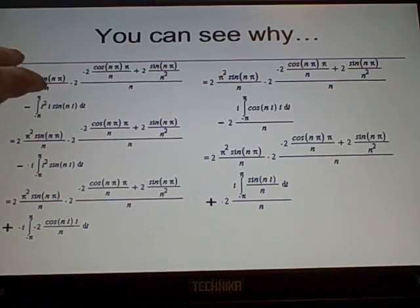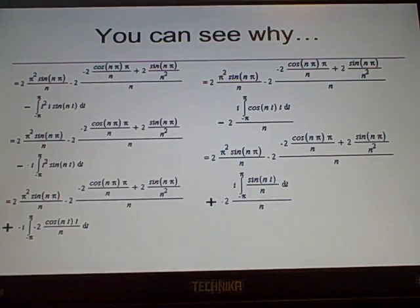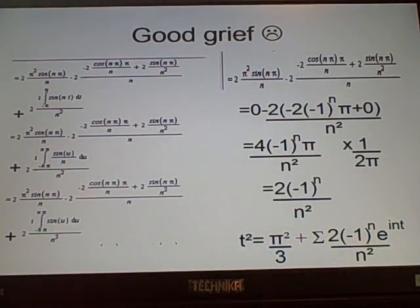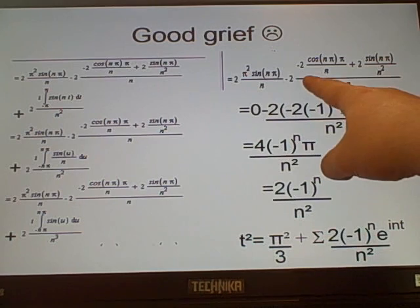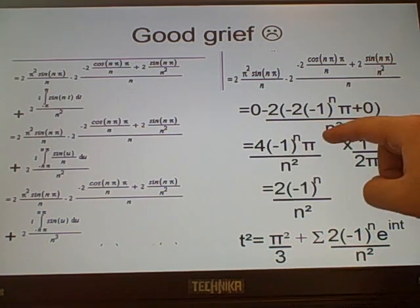So, we're just working with the first part here, the second part is left the same for the moment, until we get over here, where stuff's being changed, slowly progressing. And this, we're at the final page, thankfully, and as we work along here, finally you will end up with this, which is 2 times pi squared sine n pi over n minus 2 times minus 2 cosine n pi times pi over n plus 2 sine n pi over n squared over n.